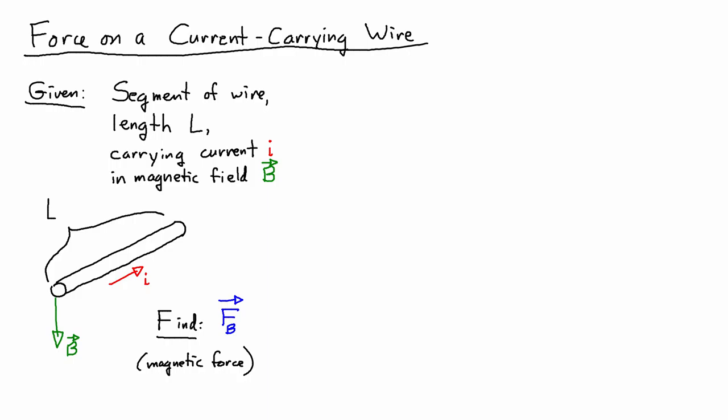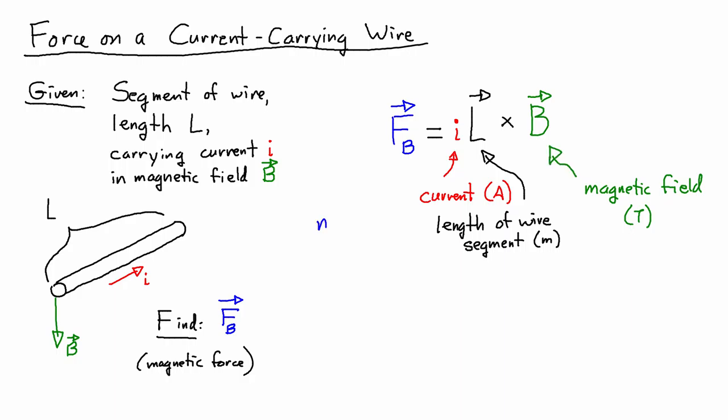There are two expressions that we use for this. The first one, we have F_B is equal to IL cross B. In this expression, I is the current, L is the length of the wire segment, B is the magnetic field, and then F_B is the magnetic force.